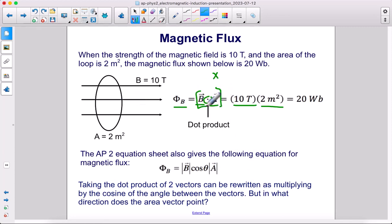But in what direction does the area vector point? Both of these are vectors. A magnetic field, that's easy to see, right? Those are arrows, so those are vectors. But the area of the loop is also a vector. So let's look into that.